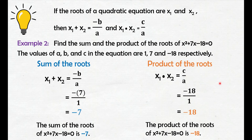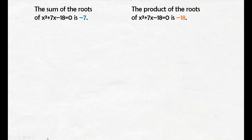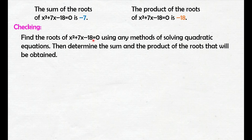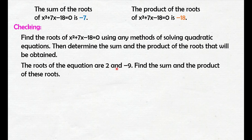So, we got the sum and product of the roots of x squared plus 7x minus 18 equals 0 without knowing what the roots are — it is like a shortcut. Let's check by getting the roots. Find the roots of x squared plus 7x minus 18 equals 0 using any method. After getting the roots, add them and multiply them to verify. The roots of the equation are 2 and negative 9.